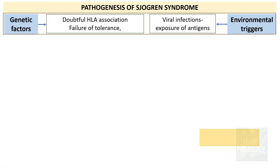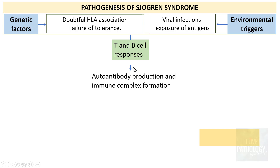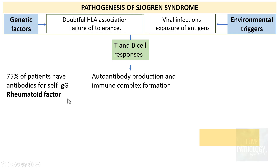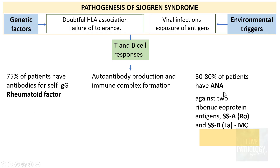In summary, the pathogenesis involves a doubtful HLA association, failure of tolerance, and environmental triggers via viral infections that expose antigens, leading to T and B cell responses, autoantibody production, and immune complex formation. Around 75% of patients have antibodies for self-immunoglobulin — that is rheumatoid factor — and more than that, 50 to 80% have anti-nuclear antibodies, specifically against the ribonucleoprotein antigens SSA/Ro and SSB/La, which are the serological markers of Sjogren's syndrome.